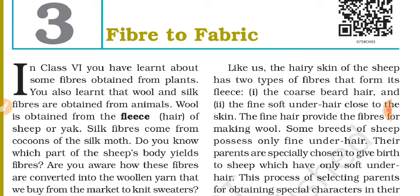Dear students, I hope you are all well and studying at home. I hope you have started the new chapter 'Fiber to Fabric.' In Class 6 you already learned about fibers obtained from plants. You have also learned about wool and silk, which are obtained from animals. Wool is obtained from the fleece or hair of sheep or yak, and silk fibers come from cocoons of the silk moth.